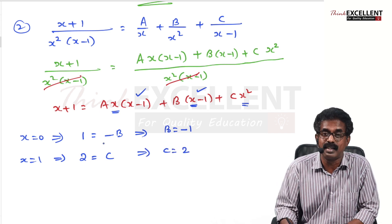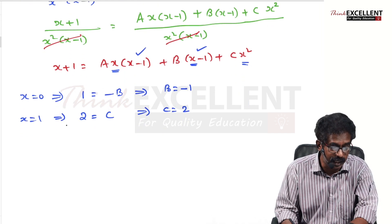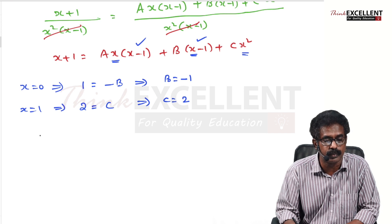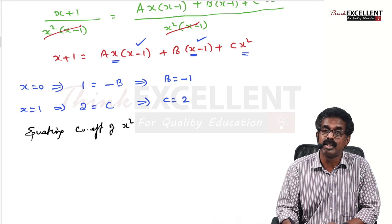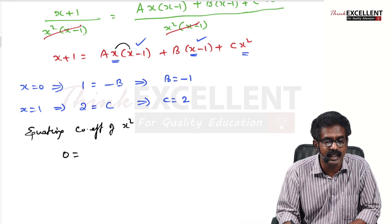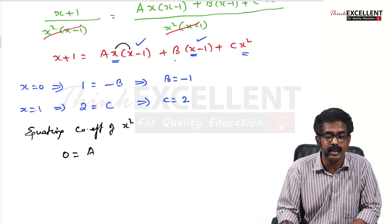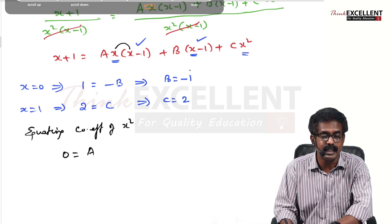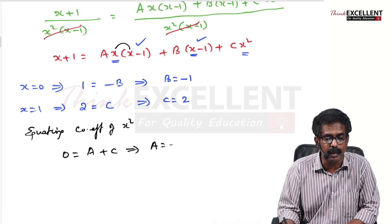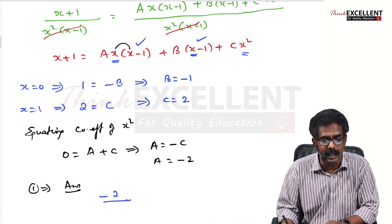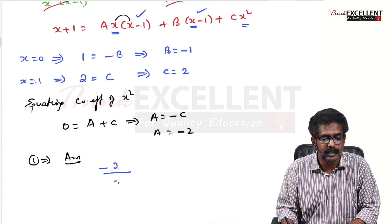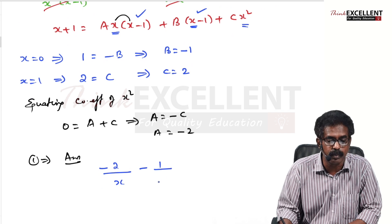To find A, equate the coefficients of x² on both sides. The left side has no x² term, so coefficient is 0. On the right side, from A·x·(x−1) the x² coefficient is A, and from C·x² the coefficient is C. So A + C = 0, giving A = −C = −2. The final answer is −2/x − 1/x² + 2/(x − 1).